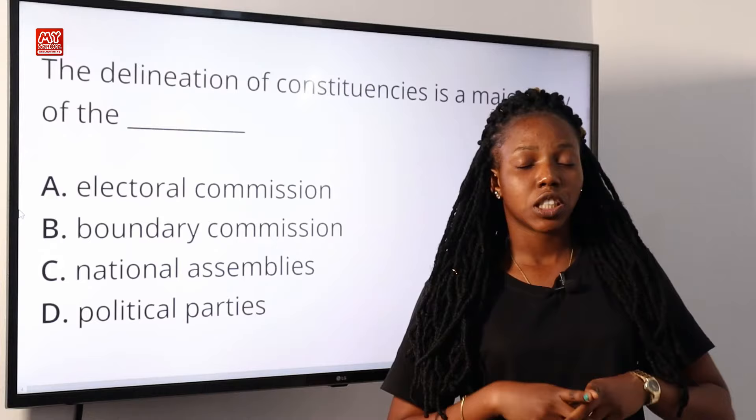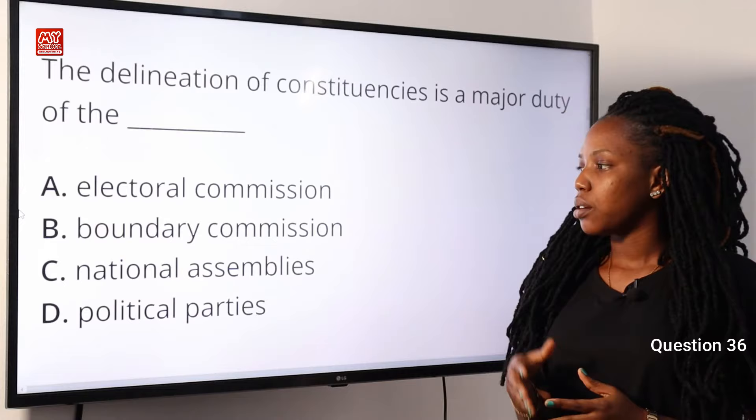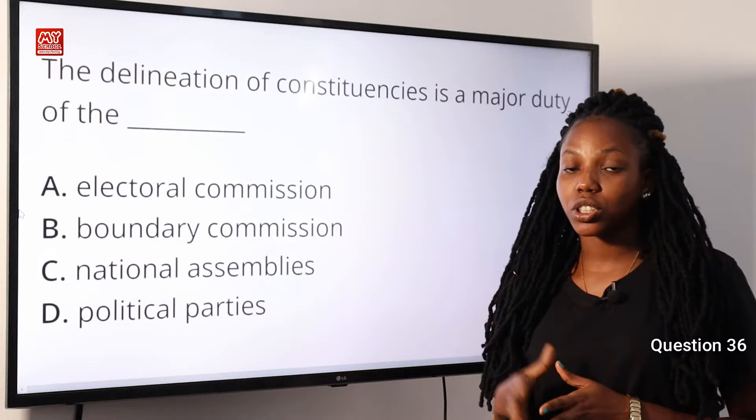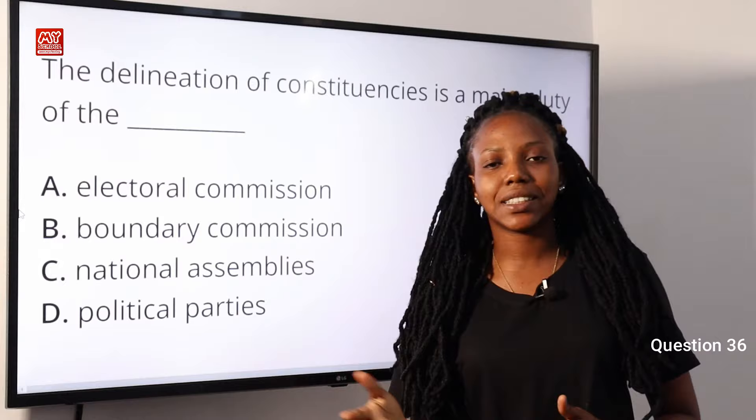Now moving on to question 36. The delineation of constituency is a major duty of the dash. A, electoral commission. B, boundary commission. C, national assemblies. D, political parties. The delineation of constituency means the division of a country into constituencies. This is done by the electoral commission, which is in charge of coordinating, organizing, and conducting elections in a country. Option A is the correct answer.